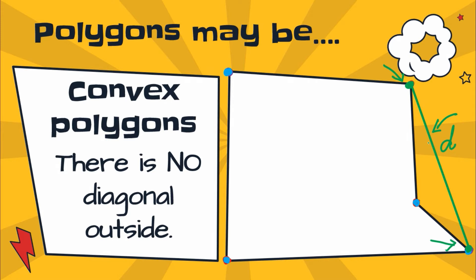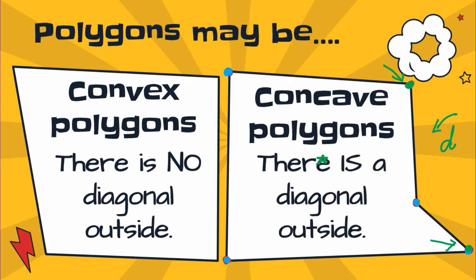Therefore, if there is a diagonal that is found outside, when you try to connect, you draw a diagonal and it's outside, therefore that polygon, this polygon you see here, is a concave polygon.